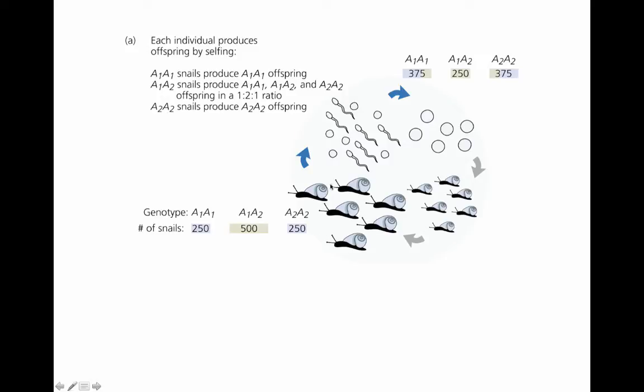So these snails are going to produce gametes, but remember, they're going to fertilize their own gametes. So the A1A1 snails are going to produce only A1A1 offspring. That's the only allele those individuals have. They're going to produce eggs and sperm that are all A1, and they're going to combine to produce A1A1 offspring.